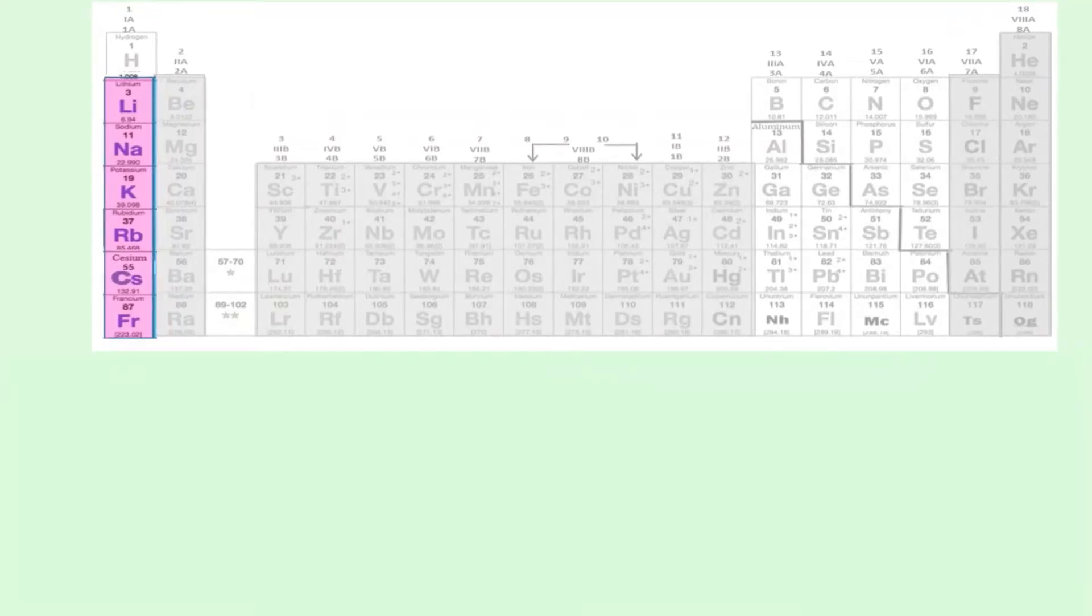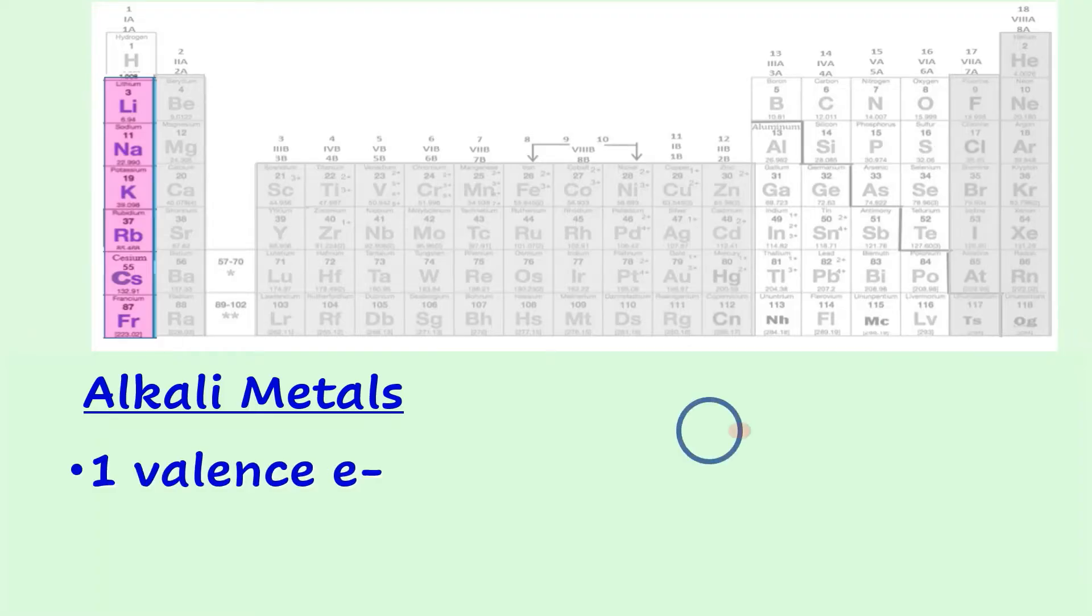The elements in group one, with the exception of hydrogen, are called alkali metals. Being in group one, they all have one valence electron.